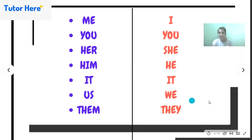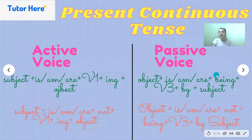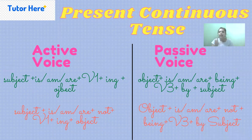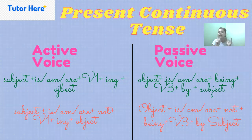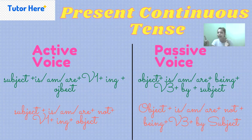Now let's understand the structure of sentences in present continuous tense in both voices. In active voice, you have a subject, along with is/am/are, then verb first form plus -ing, and then an object. So the structure is: Subject + is/am/are + Verb¹ + -ing + Object.